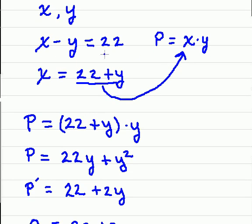What we want to do is take our constraint here and solve for x or y. I've solved for x, taking the y over to the right-hand side, so x equals 22 plus y.